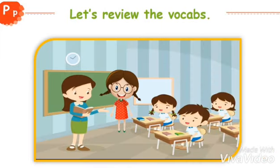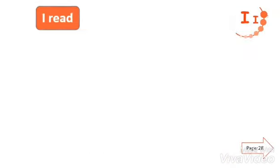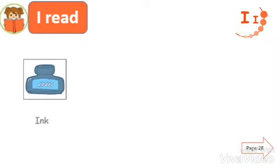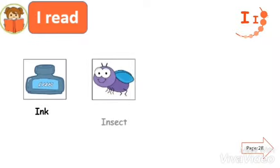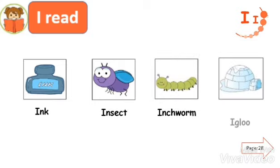And now it's the time to review with Noor the vocabulary words with the letter I short sound. Ink, insect, inchworm, igloo.